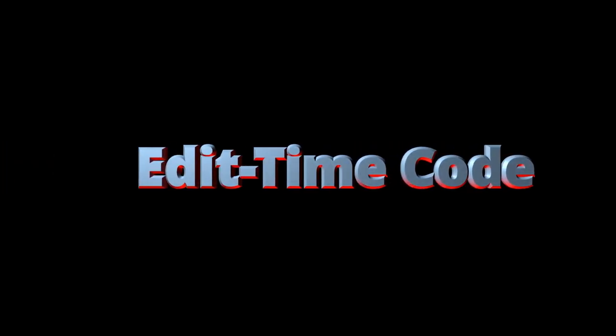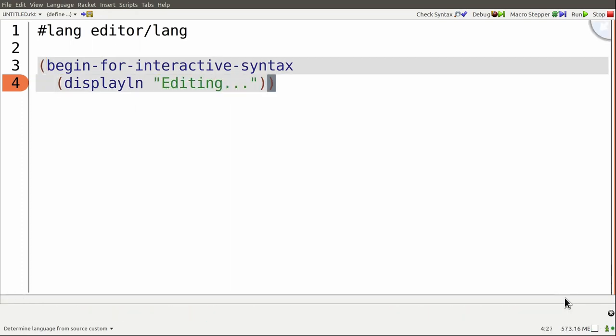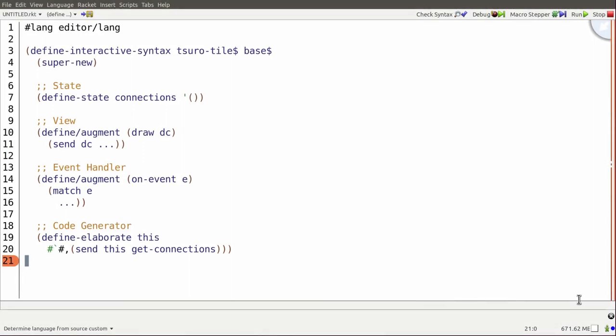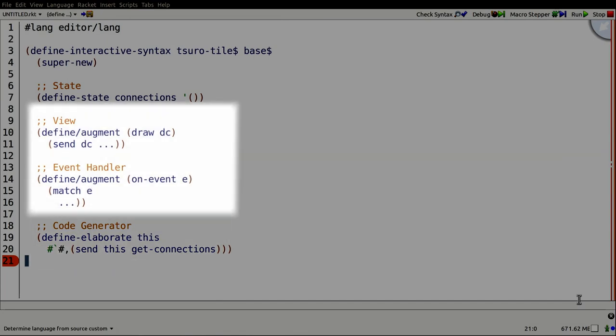Interactive syntax extensions introduce a new concept, edit-time code, which is code that runs as you edit your program. The Define Interactive Syntax form ties these three phases together. It defines a new type of extension for use in runtime code, defined by a code generator that runs at compile time, and a view and event handler that runs at edit time.